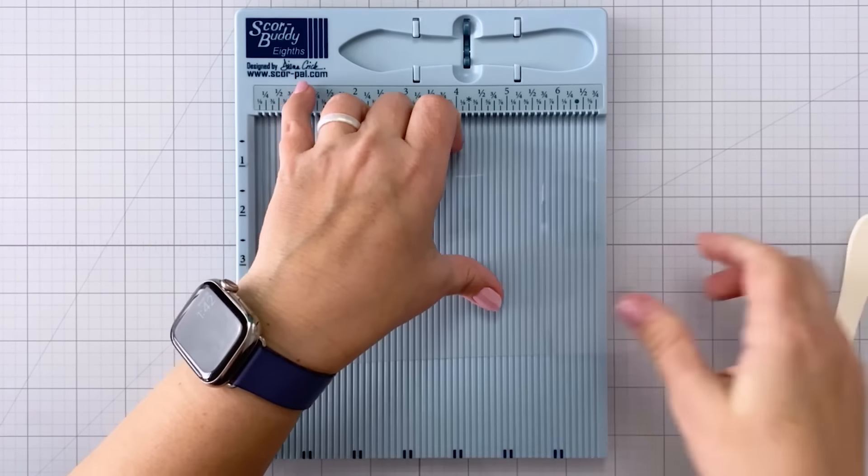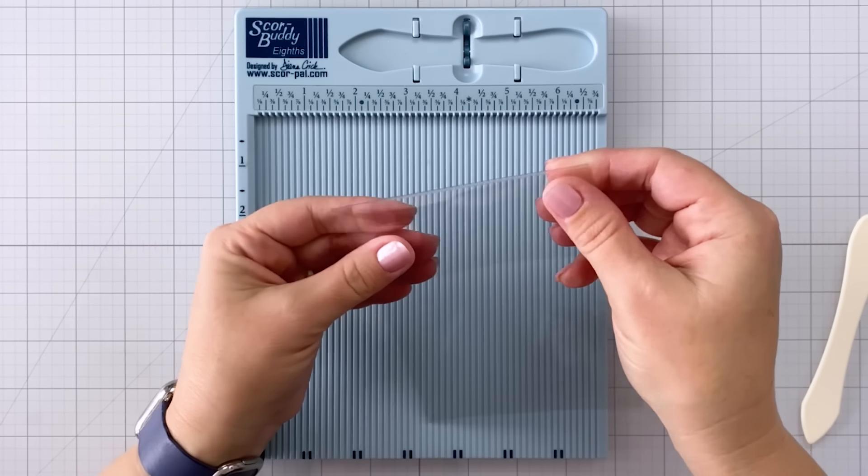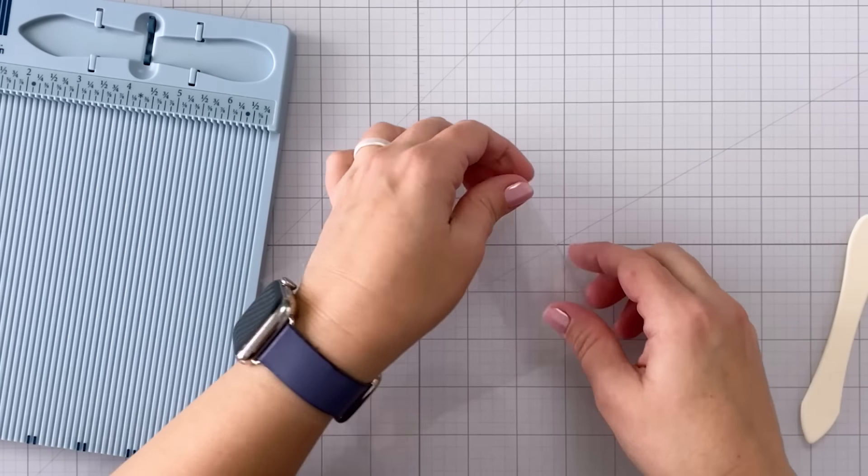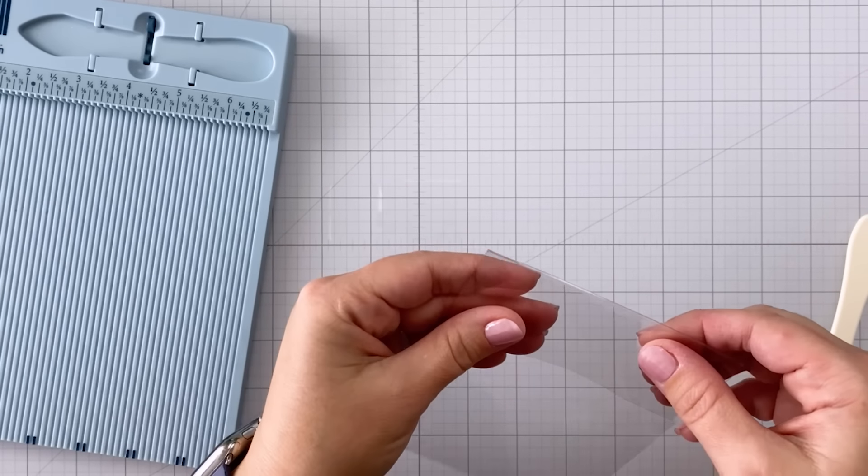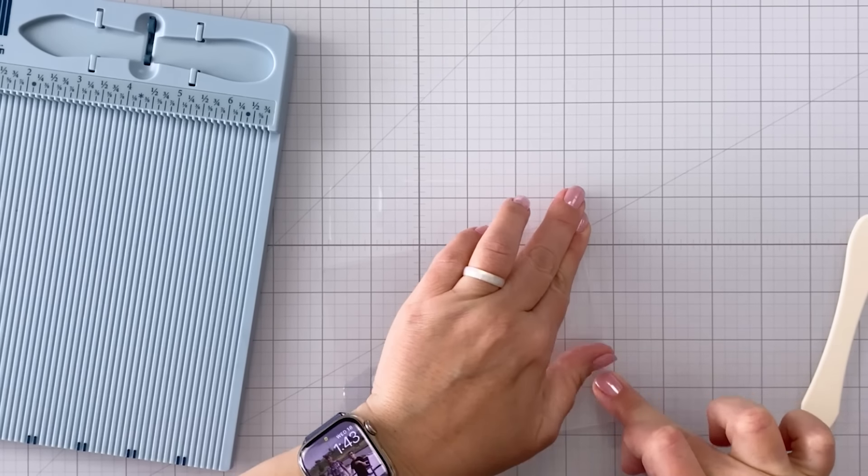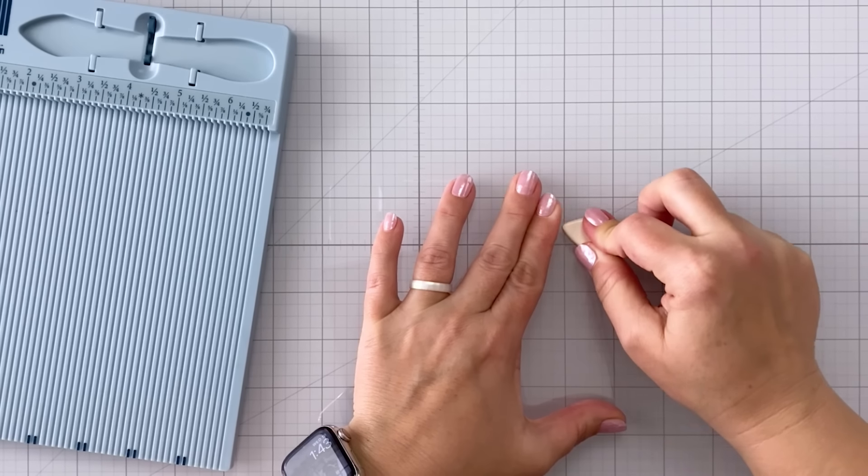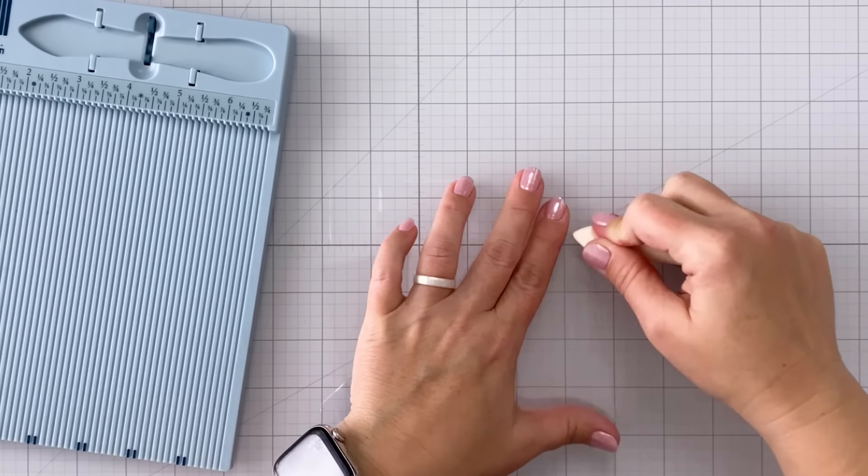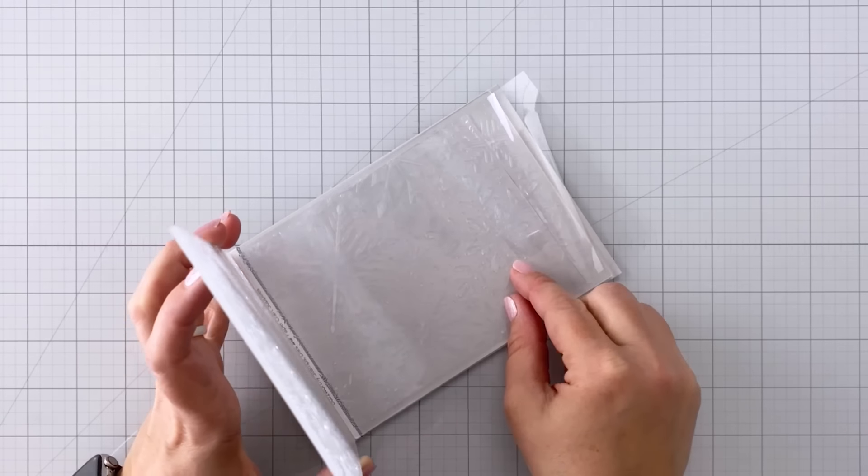Essentially we're creating a spot where that front flap of the acetate can go over an A2 sized card. So you're going to want to use your bone folder or your scoring tool and just reinforce that score line because that's going to help this to lay flat and it's also going to help you to refold that score line once you have run your acetate through your die cutting machine.